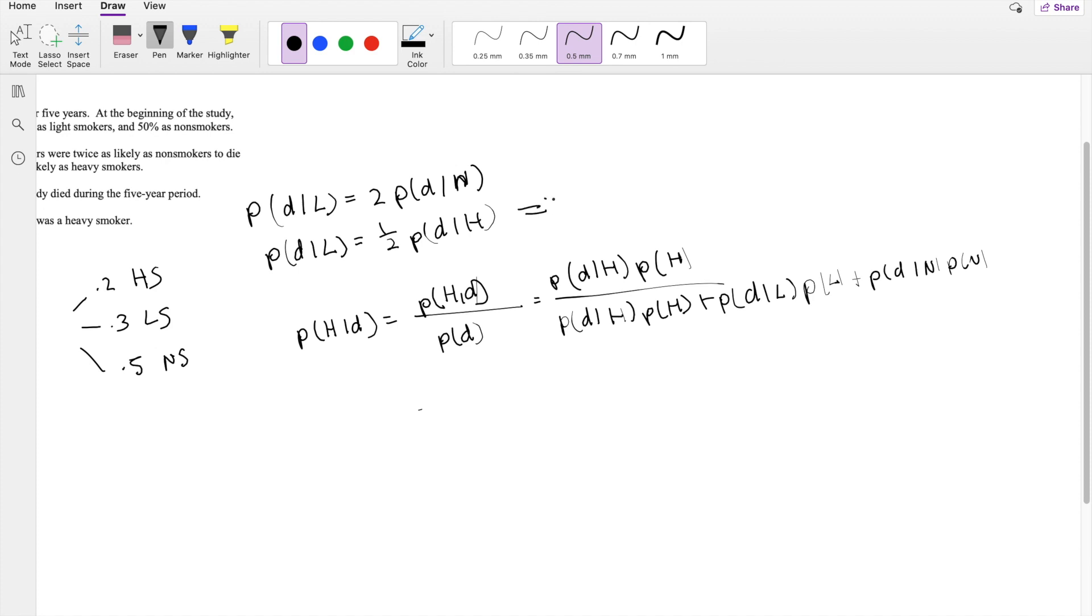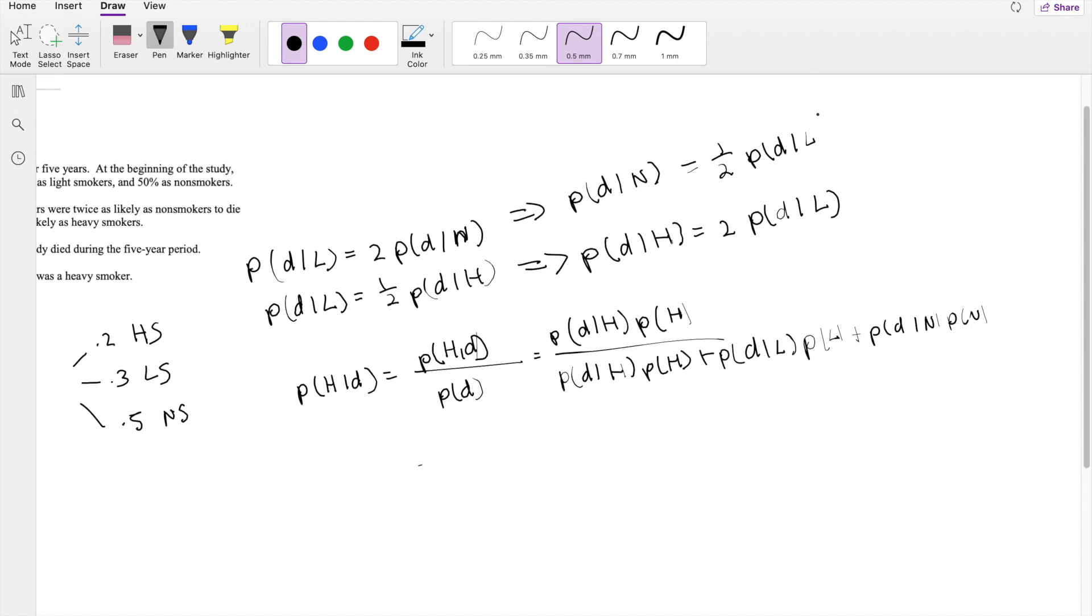So we can also say the probability that they died given they were high risk is equal to twice the likelihood, right? And we can also rephrase this: the probability that they died given they were normal is equal to one-half the probability that they died given they were light smokers. Alright, so let's put it in here.